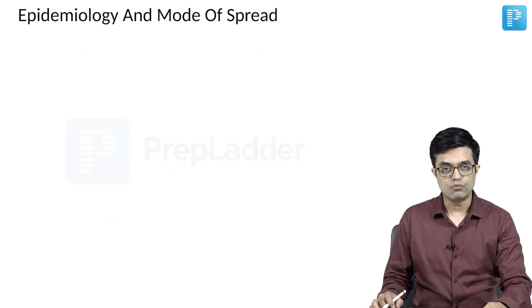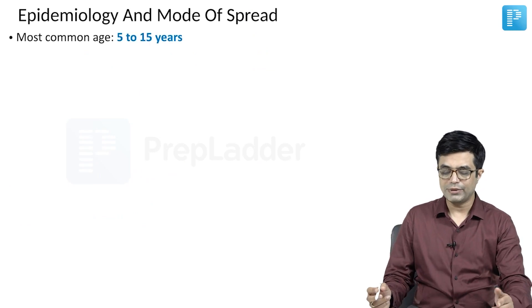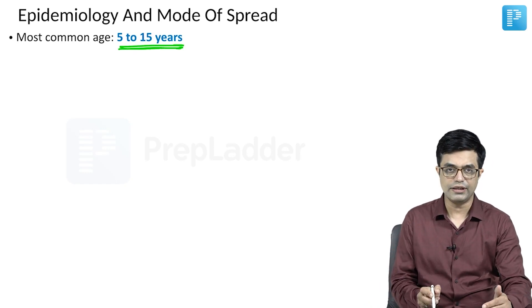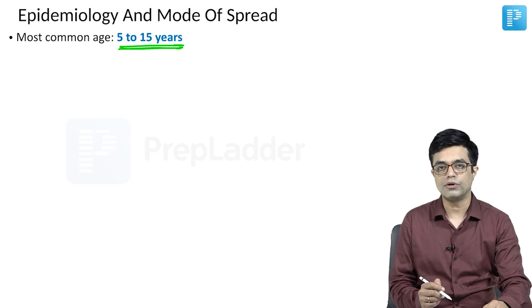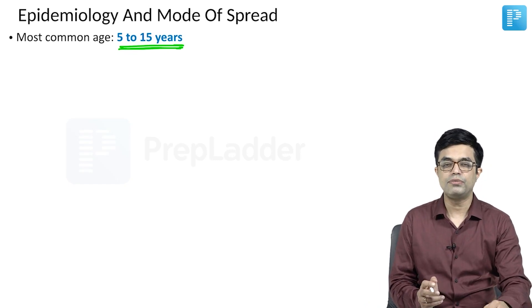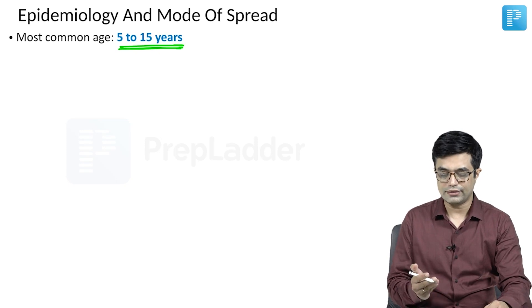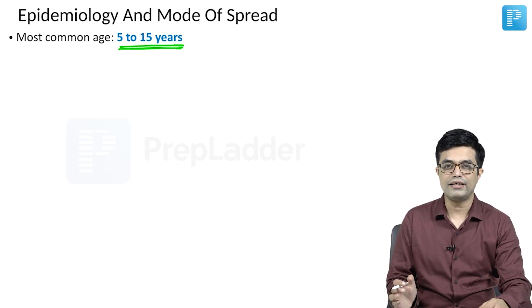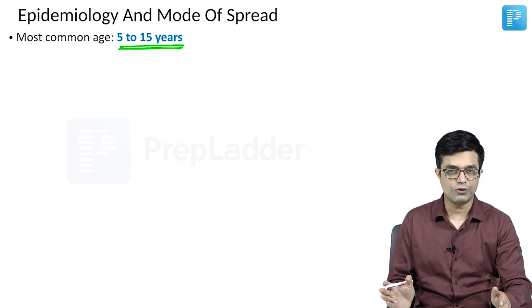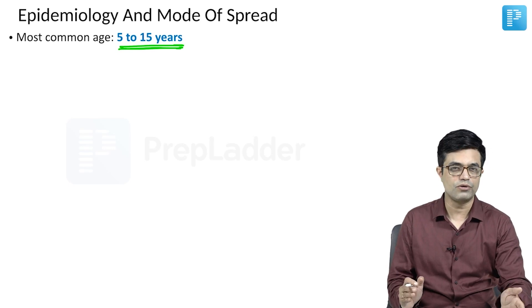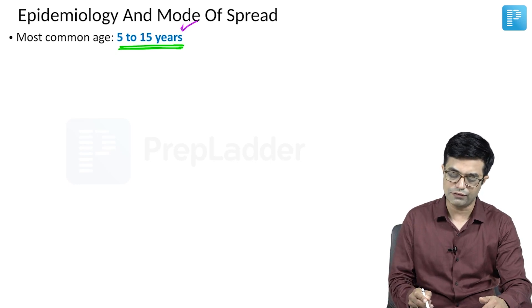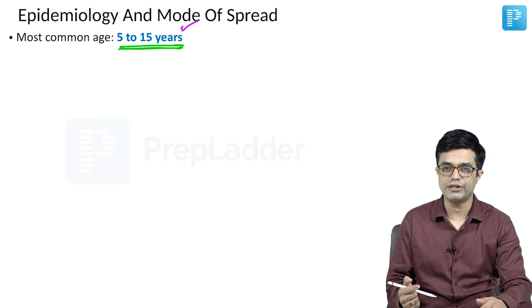What is the epidemiology and mode of spread of mumps virus? The most common age group affected is 5 to 15 years. This age group is taken from Indian standard books. Nelson says that in the pre-vaccination era in the 70s and 80s, the most common age group was 5 to 9 years, but does not give details about the current scenario. Indian texts give ranges of 4 to 10 years, 5 to 12 years, or 5 to 15 years, so we stick with 5 to 15 years as the peak age group.